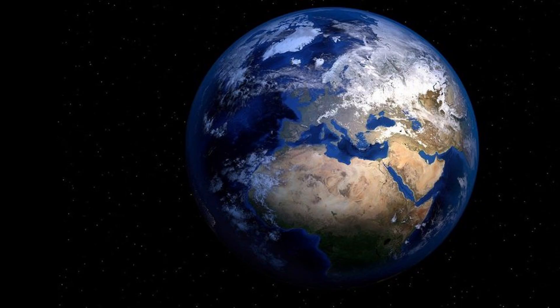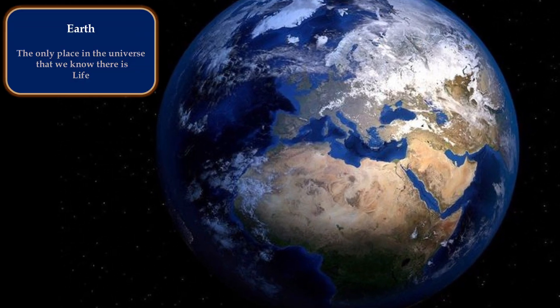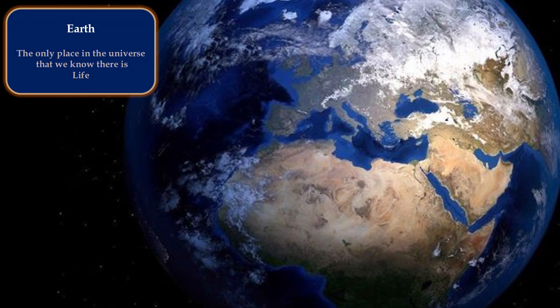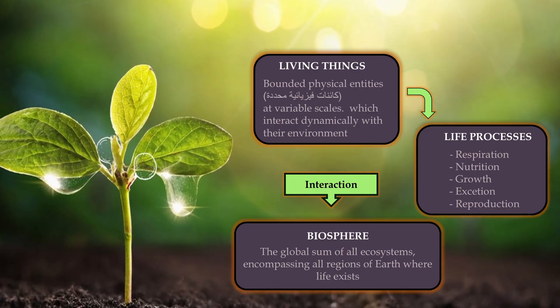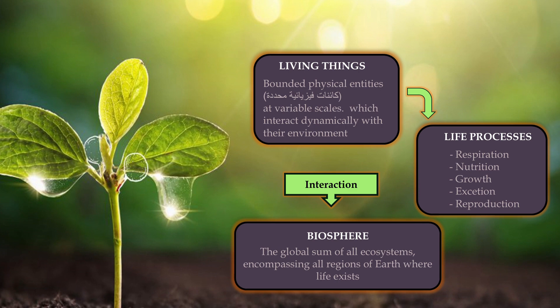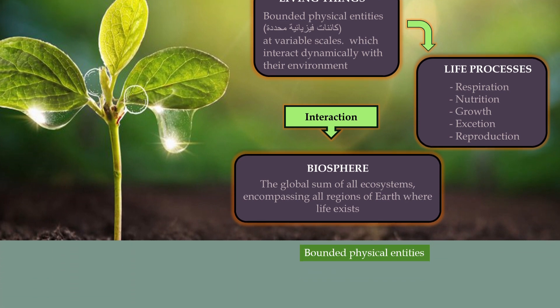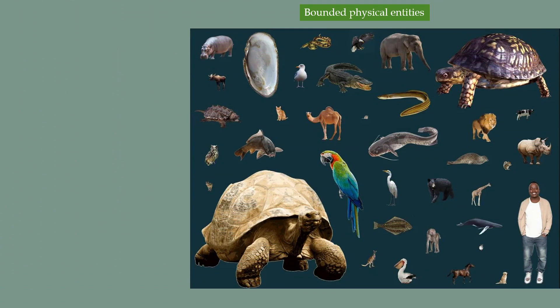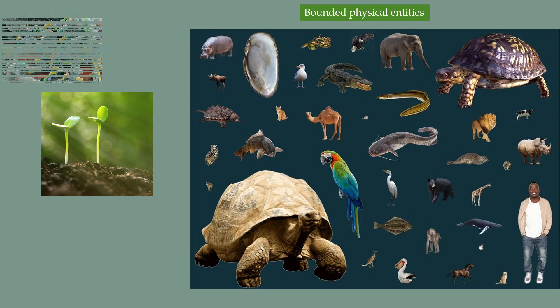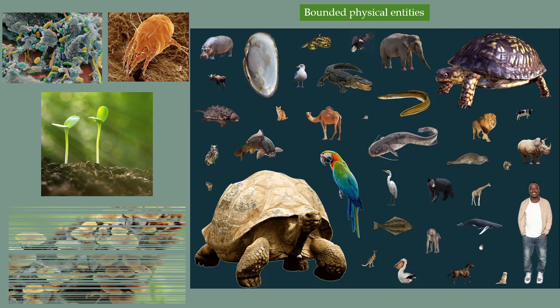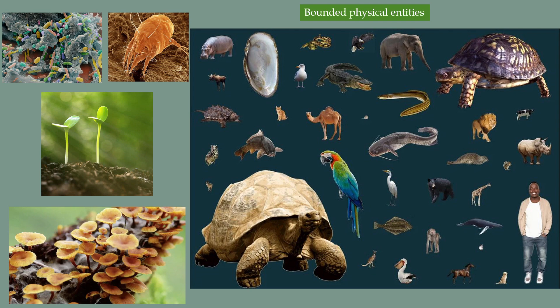The earth is the only place in the universe where life exists. From a scientific perspective, life is generally defined by characteristics distinguishing living things from non-living matter. Living things are bounded physical entities at variable scales, such as animals, plants, microorganisms, and fungi, interacting dynamically with their environment.